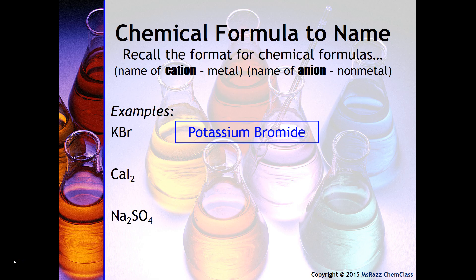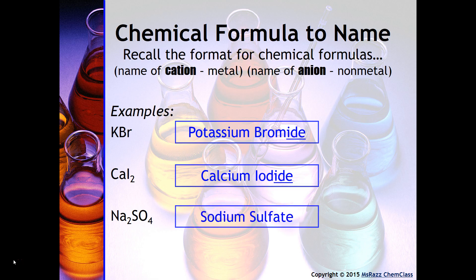You do need to change the ending of the nonmetal to -ide. In the next example you have calcium iodide. You need to try to do your best with naming and formulating and spelling things correctly, but as you get more used to the language of chemistry it'll become easier. Finally you've got sodium, and then if you recognize this is SO4 which is on your polyatomic ion sheet called sulfate, so this would be called sodium sulfate.